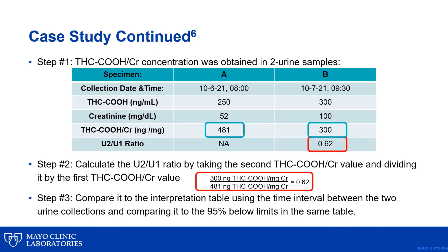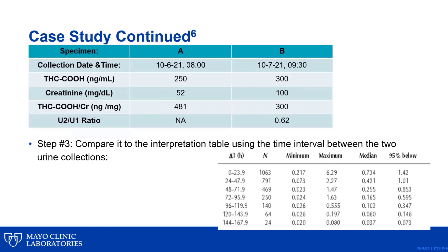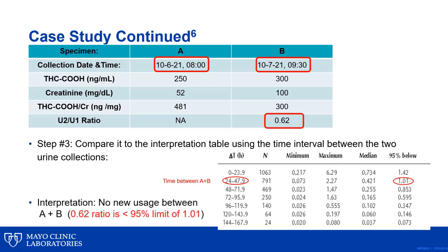Step three is to then compare this decision ratio to the interpretation table using the time interval between the two urine collections and comparing it to the 95% below limits in the same table. In this clinical case study, the time in hours between the two urine collections is 25.5 hours and falls between the 24 to 47.9 hours in the table. You then compare the decision ratio of 0.62 to the 95% below limits in the same row in the table, which is 1.01. Since the decision ratio of 0.62 is less than the 95% below limit of 1.01, this indicates no new usage between the two collection time points.